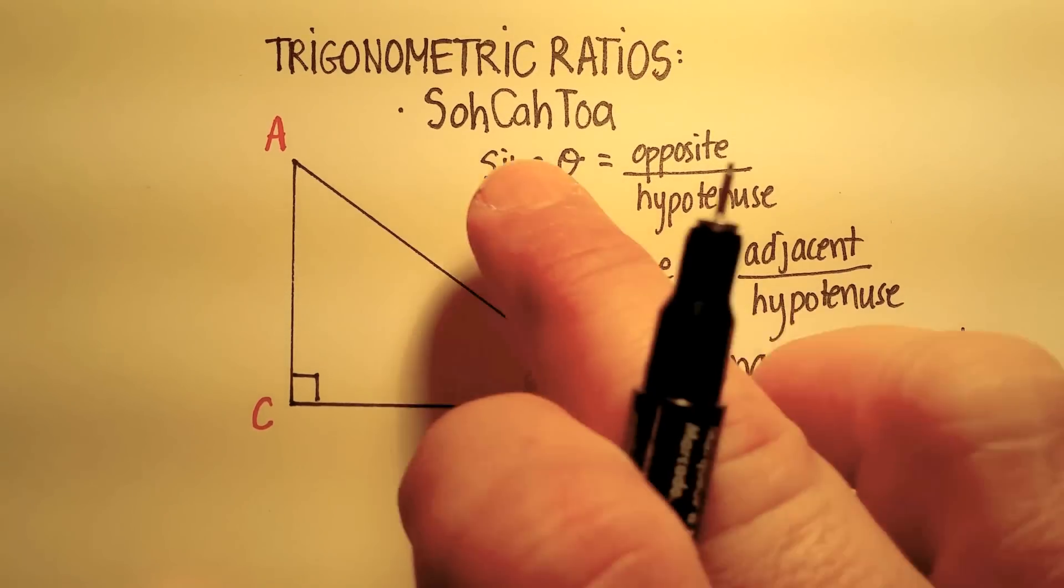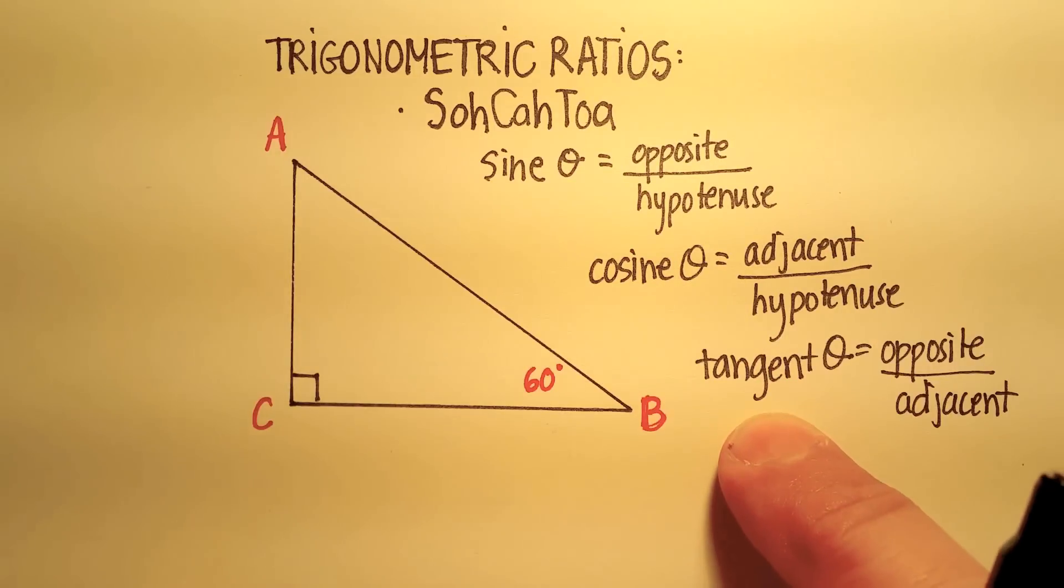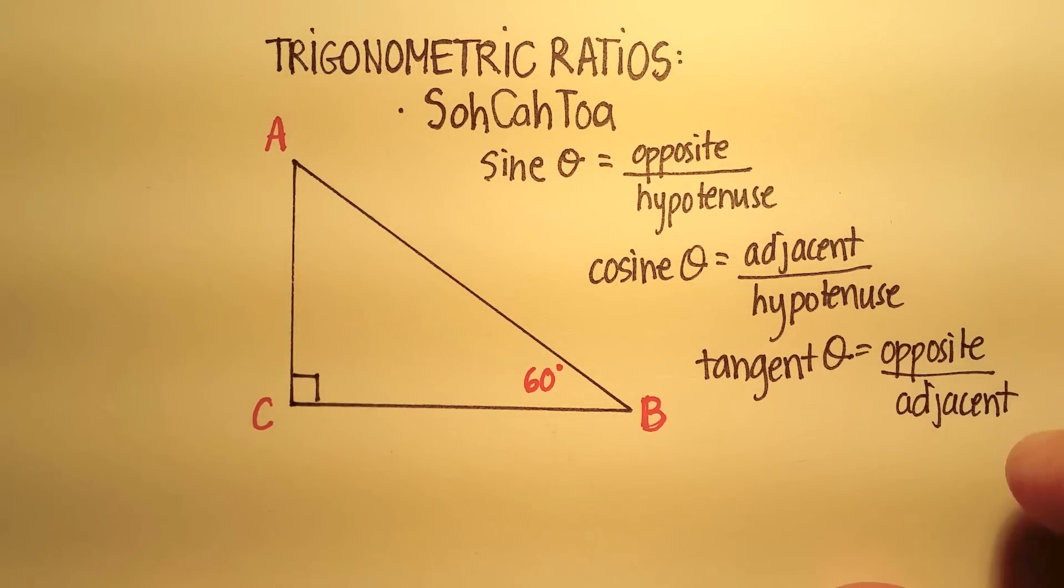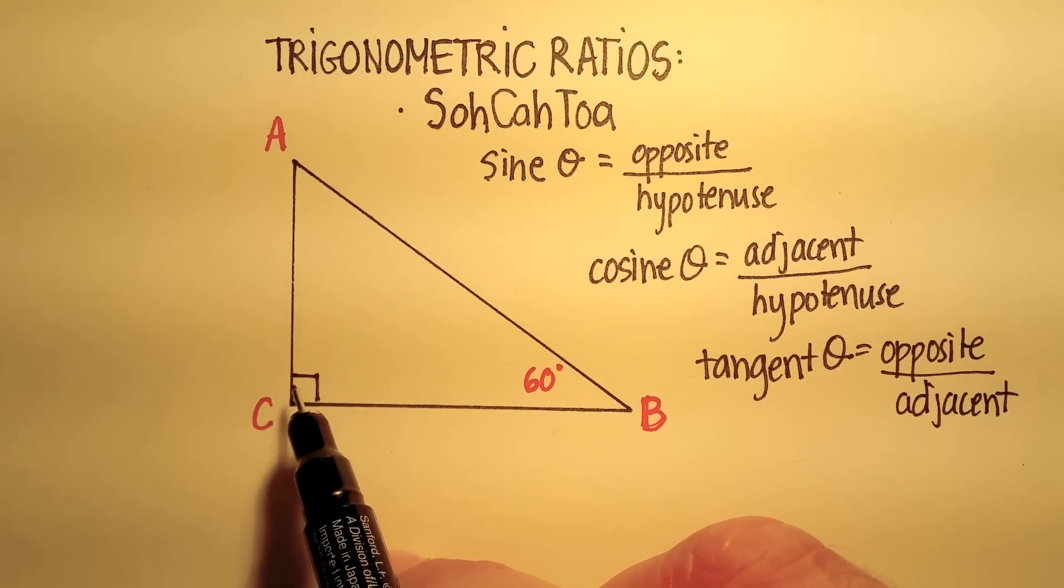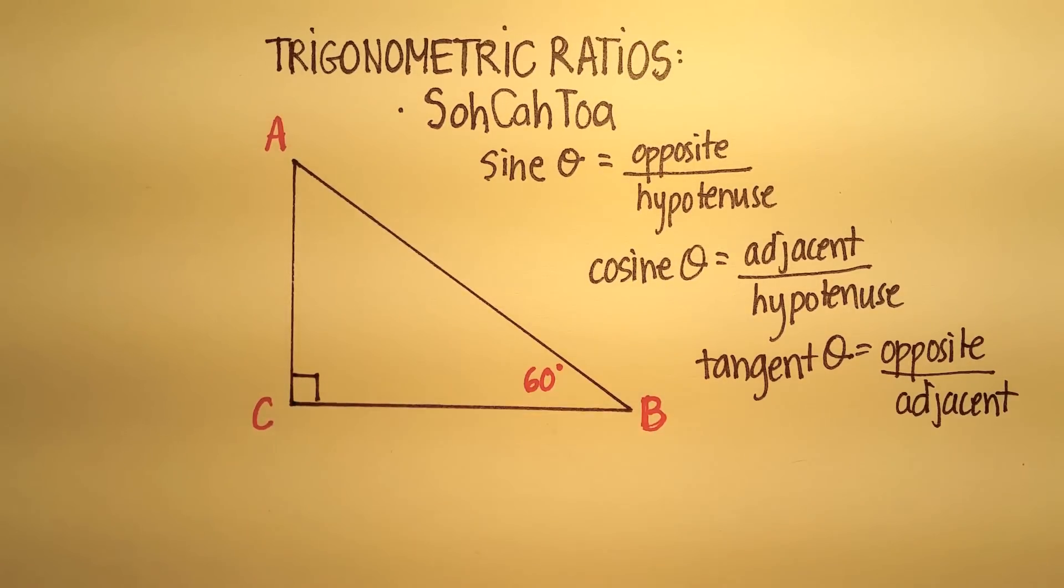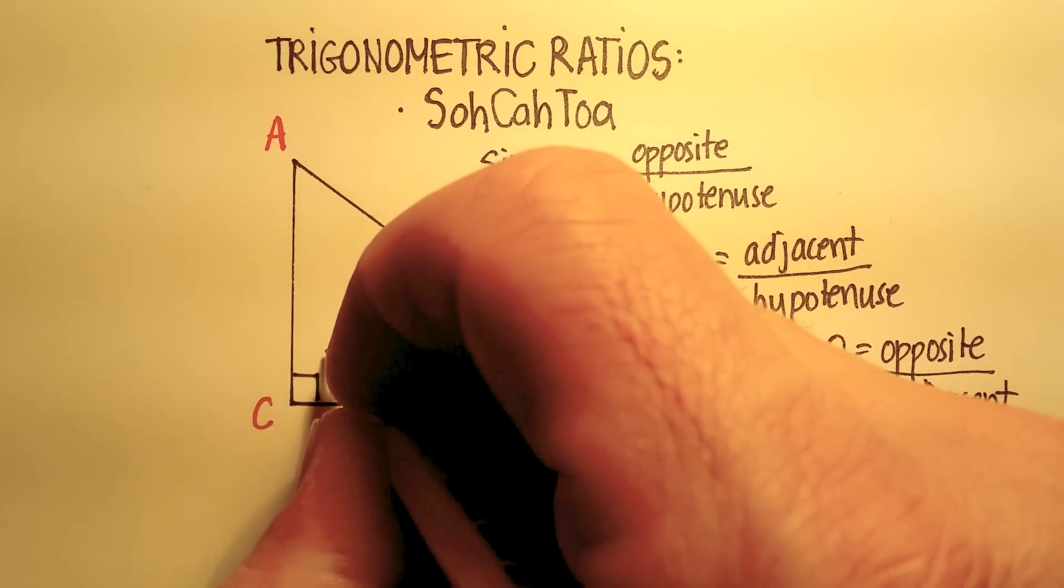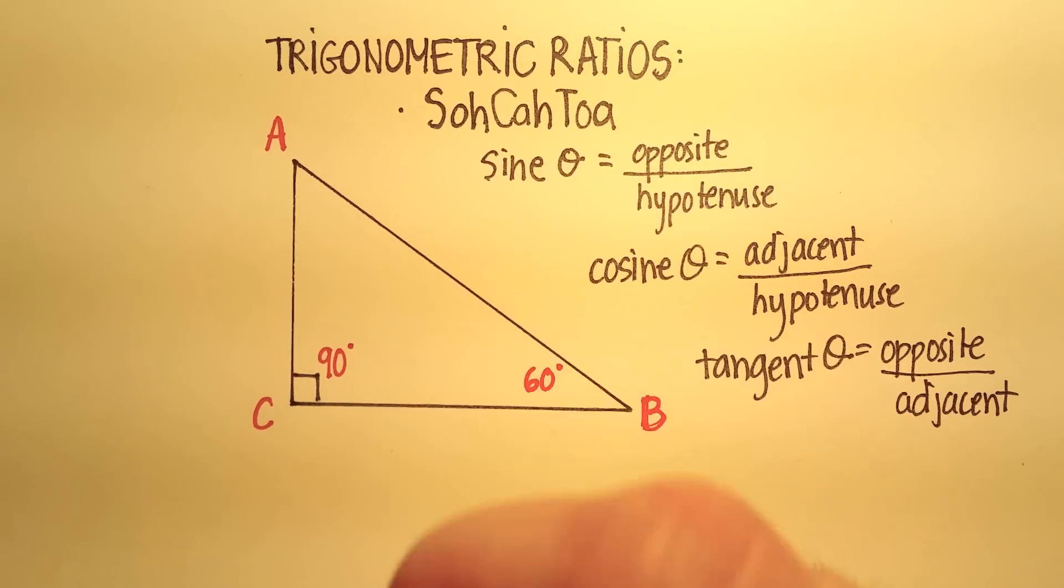Now let me work a problem so you can see exactly what these three trigonometric ratios or trig ratios mean. Now in a right triangle, we know that we had a 90-degree angle. That was a given because these can only work with 90-degree angles or with right triangles.